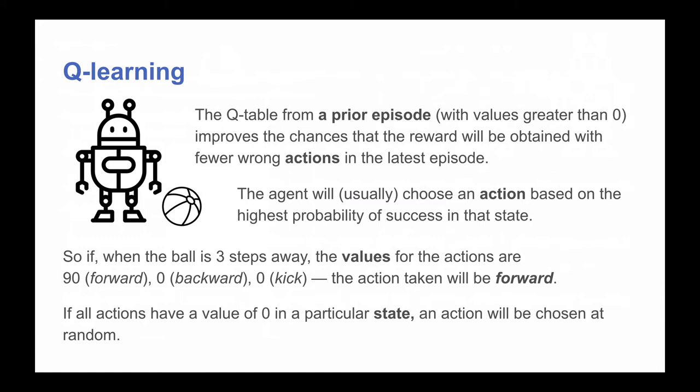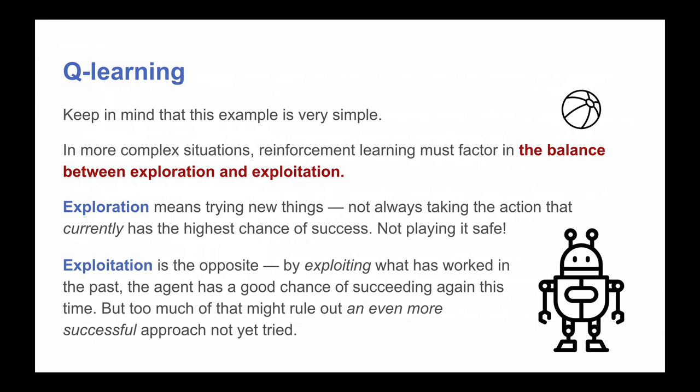By using the Q-table from a prior episode, this improves the chances that the agent will perform better next time. The agent will usually choose an action based on the highest probability of success in that state, and eventually, as the numbers get higher for good actions that lead to the reward, the robot will get better and better at always choosing the desirable action. If all actions available have a value of zero in the table, the next action will be chosen at random — the programming will simply pick one of the available actions at random, and the agent will go on from there.